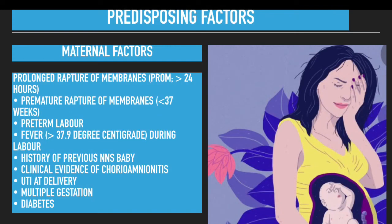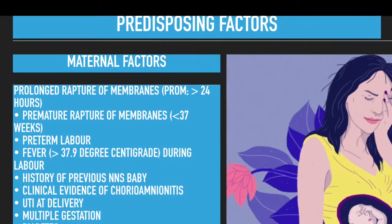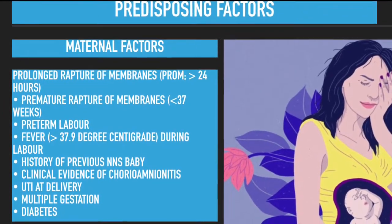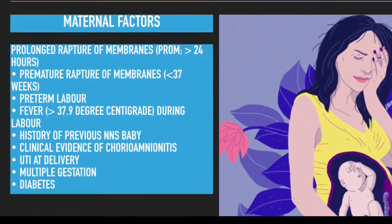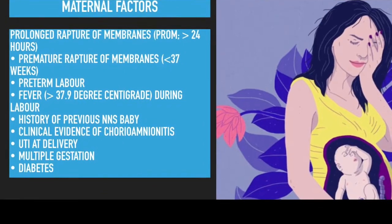Let's discuss the predisposing factors, beginning with maternal factors. These include: prolonged rupture of membranes, premature rupture of membranes, preterm labor, a fever of greater than 37.9 degrees during labor, history of a previous neonatal sepsis baby, clinical evidence of chorioamnionitis, UTI in the mother at delivery, multiple gestation such as twin pregnancy, as well as diabetes.